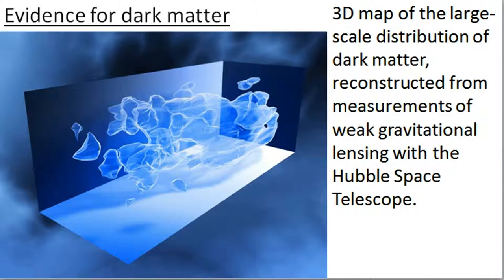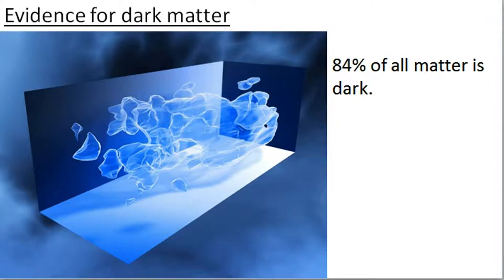Here's the map. The measurements taken to achieve this map were taken by the Hubble Space Telescope. When we look at how much gravity there is in the universe, we can see that there must be a lot of dark matter, and that's how scientists know that it makes up about 84%.